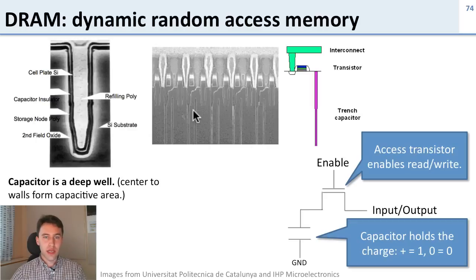Here's another picture of capacitors. You can see the capacitors going down, you can see the access transistors up here, and then you can see the wires that connect them up to the rest of the chip. Here's a schematic picture of it showing you how deep the transistor is compared to the size of the access transistor.